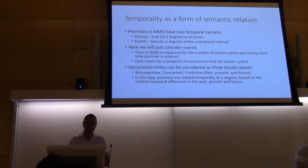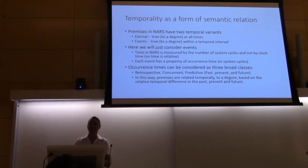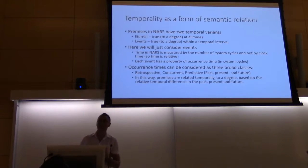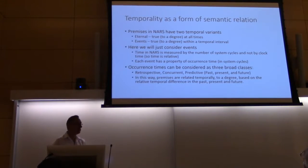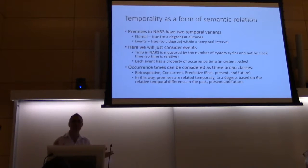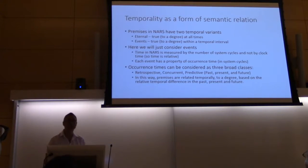Let's take a little look at temporality. I have to be honest, I'm not even sure whether temporality is a word, but it sounded right to me. Temporality is a form of semantic relation. Premises in NARS have two temporal variants: eternal, which are true to a degree at all times — true forever — or events, which are true to a degree for a moment in time or a temporal interval. For now, we're just going to consider events.